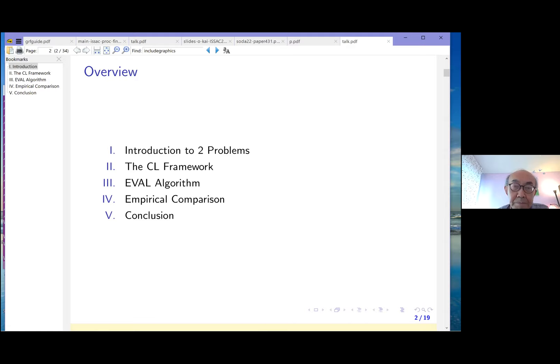I'll briefly introduce the two problems, then talk about the CL framework, Cornelius-Loner, to understand the class of range functions. Then I'll talk about a root isolation algorithm called EVEL. EVEL is the one-dimensional version of the PV algorithm. I was so struck by the PV algorithm when I learned about it that I decided to go from two dimensions to one dimension. Then we'll do empirical comparison of our range functions in the context of EVEL algorithm and conclude.